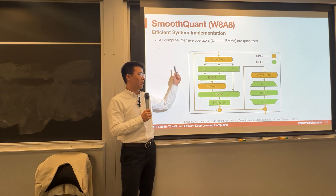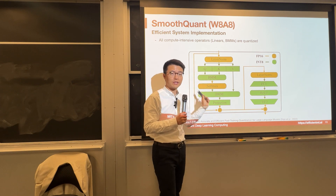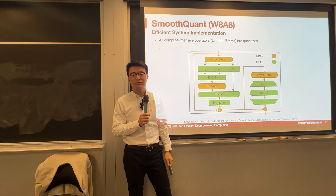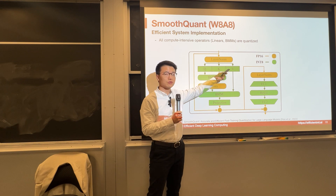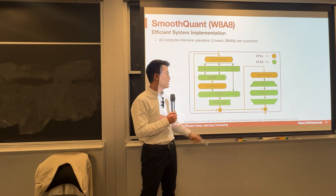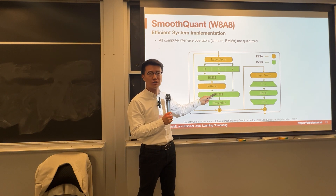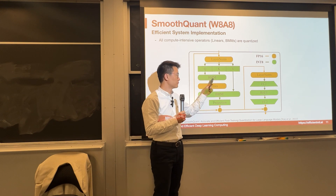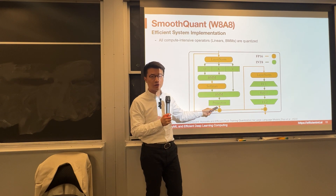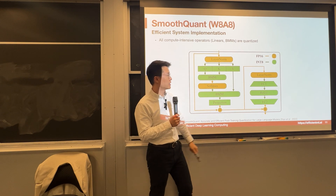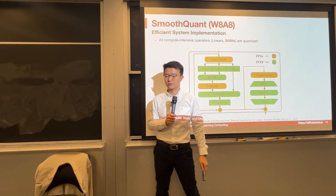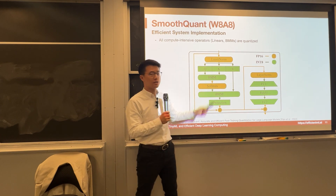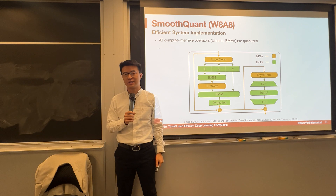We can quantize both weights and activations for all compute-intensive kernels, including the QKV transformation, BMM in the attention (QK transpose and attention times V), the output projection layer, and two FFN layers. Only the layer norm and softmax layers are kept at FP16.